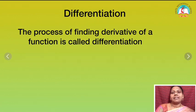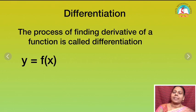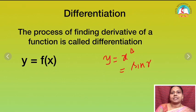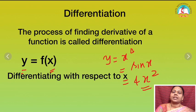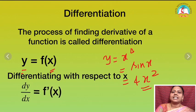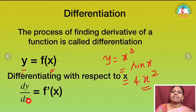I will just give you an example. If I have y is equal to f of x — what is f of x? Y is a function of x. For example, y is equal to x to the power 4, or any trigonometric functions like sin x, cos x, tan x, or 4 into x to the power 2. If I am having a function with respect to x, then we can differentiate it with respect to x. This can be denoted as dy by dx is equal to f dash of x. Your y's differentiation is taken as dy by dx and f of x becomes f dash of x.